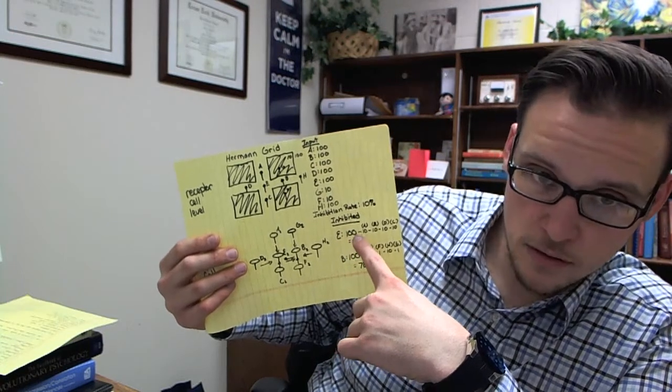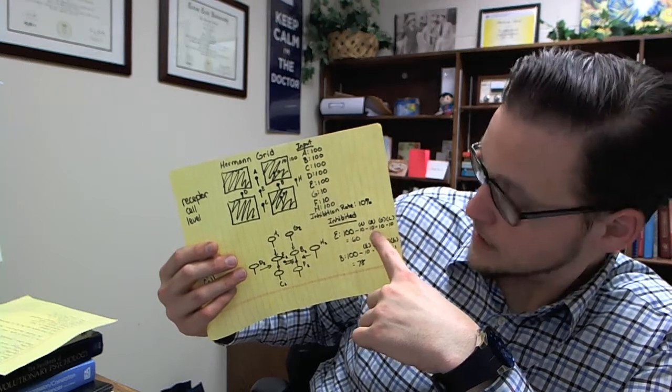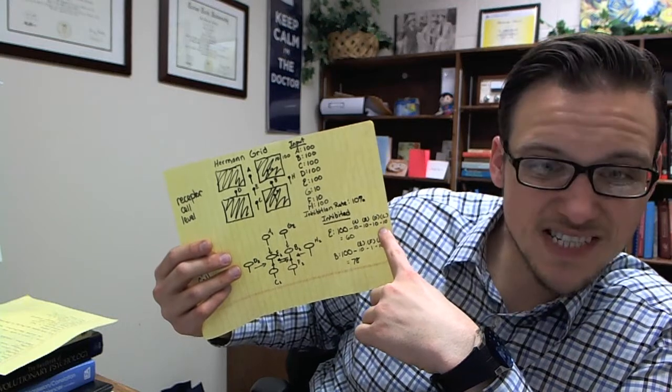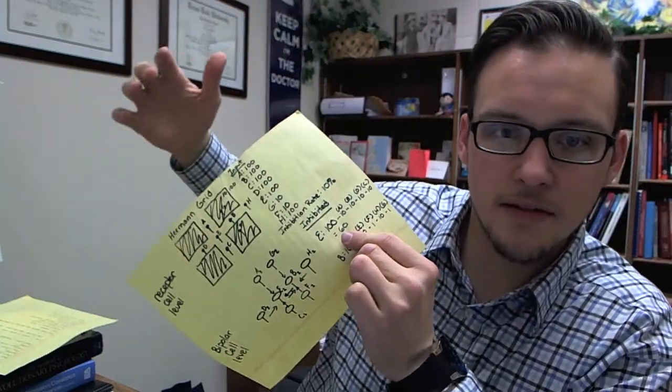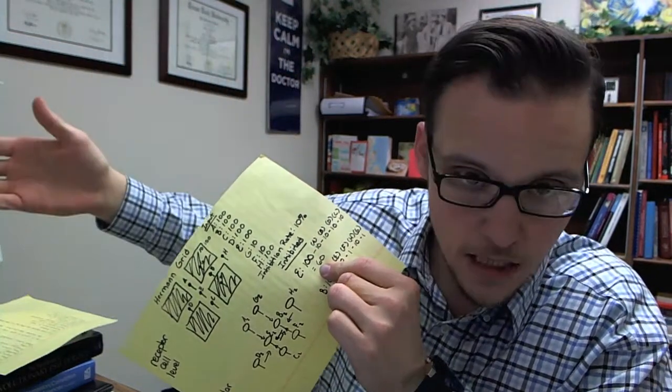So E, which had an initial activation of 100, is getting inhibited by 10 from A, by another 10 from B, by another 10 from D, and by another 10 from C. Now, in order to figure out how much E will ultimately, or the bipolar cell for E will ultimately respond, we have to basically add up the initial activation and subtract from it all the inhibition. So we know that E is getting input of 100, and it's being inhibited by 10 from A, B, C, and D. That means that E has 100, minus 10 for A down to 90, minus another 10 for B down to 80, minus another 10 for C down to 70, and minus another 10 for D down to 60. So E, its ending activation in bipolar cell E is 60.